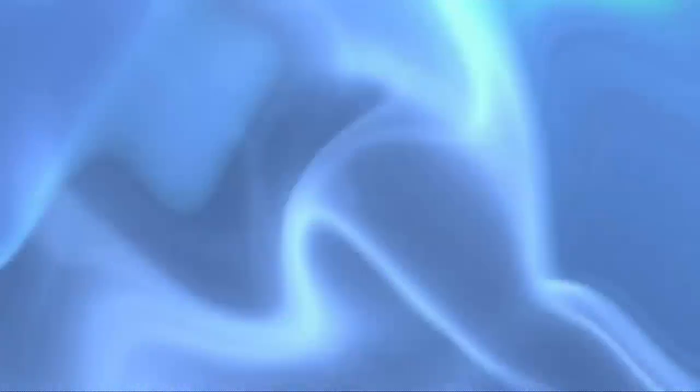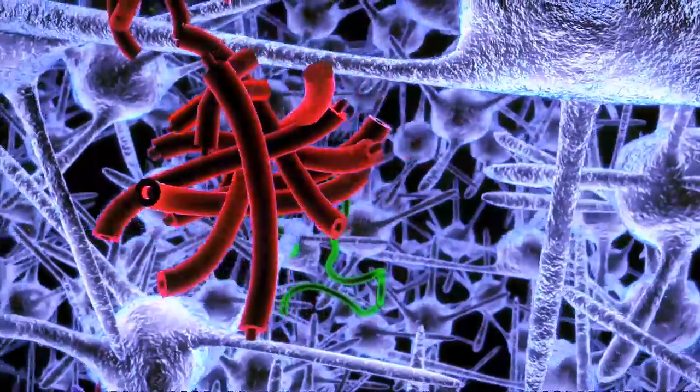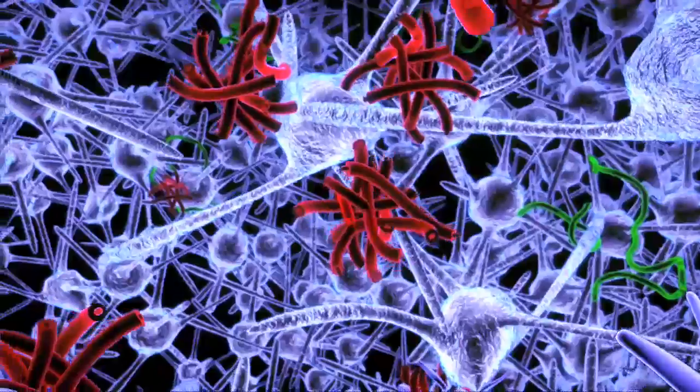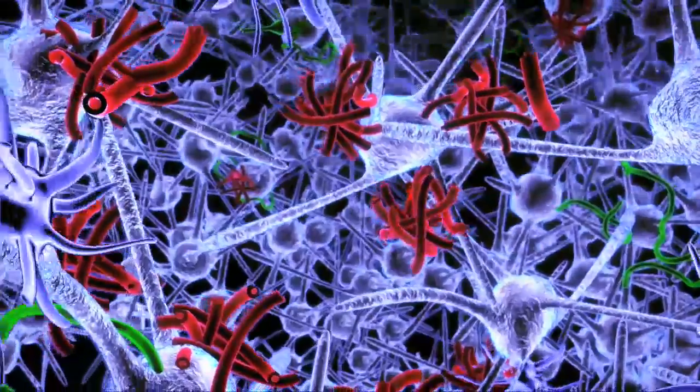Beta-amyloid is a normal product of metabolism. It is not something that we ingest. It becomes toxic only under certain conditions.